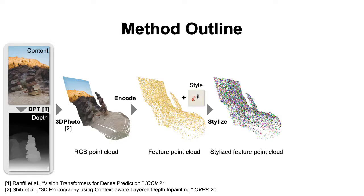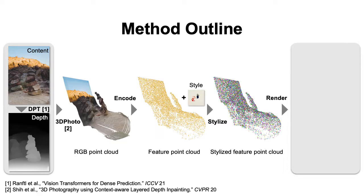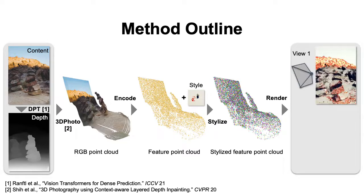A style transfer module further injects style into the scene with a cross-attention between the point cloud of content features and the VGG feature maps of the style image. As a final step, a rasterizer projects the styled features to 2D given camera parameters, and the neural renderer decodes the rasterized feature maps into stylized images.